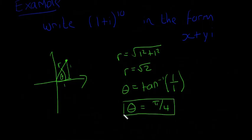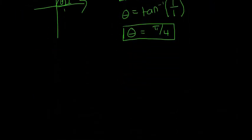So now we have our two numbers here. We can write our complex number in the polar form.